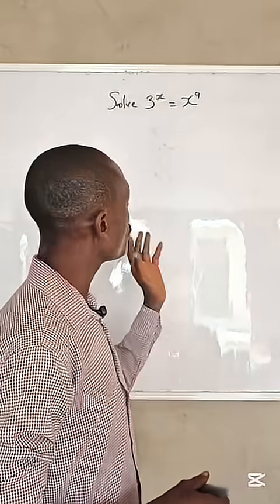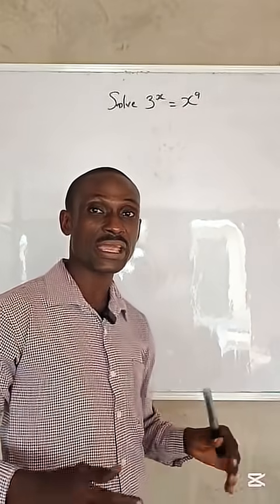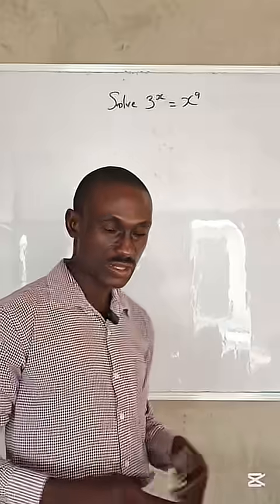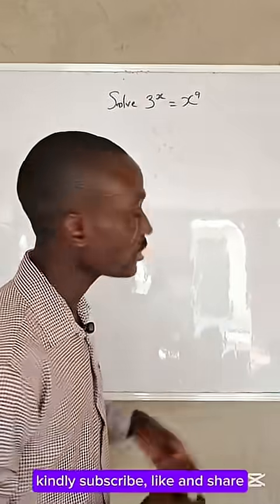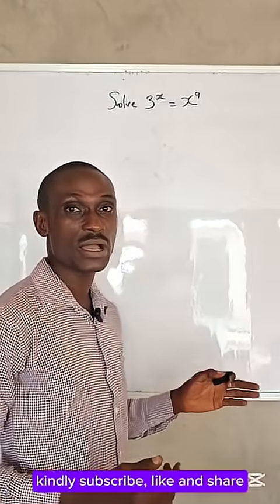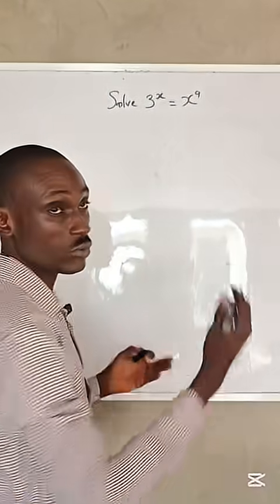If we look at the question, it doesn't look like a normal equation, so we are going to use trig. Let's start. 3 raised to the power of x equals x raised to the power of 9. So what are we going to do?